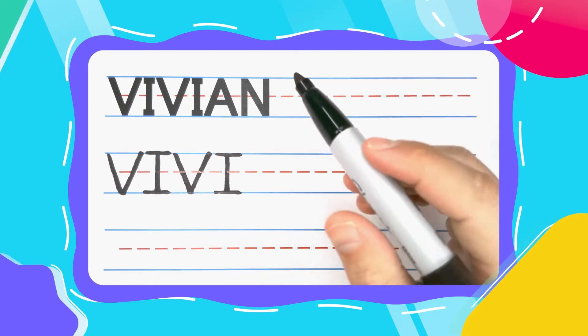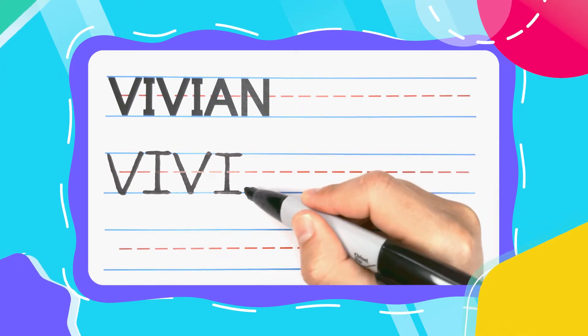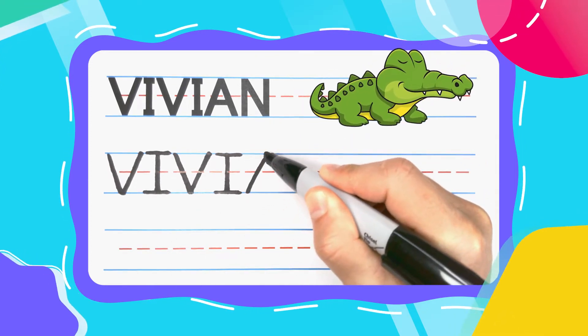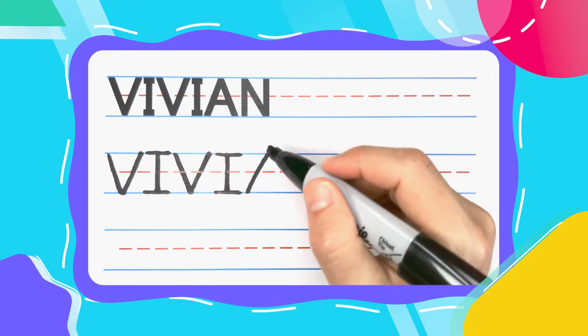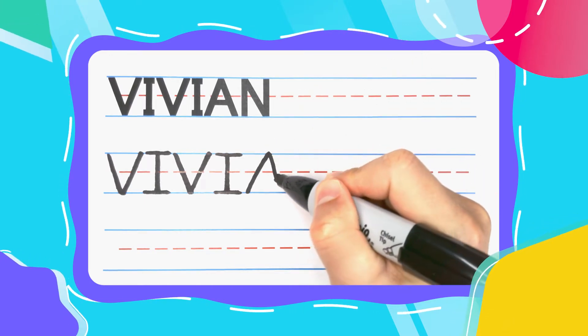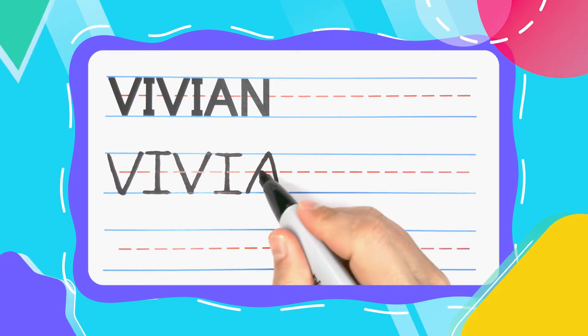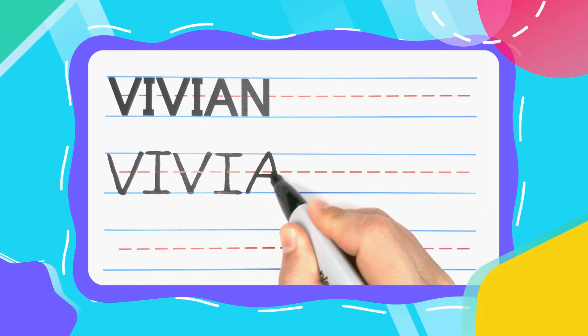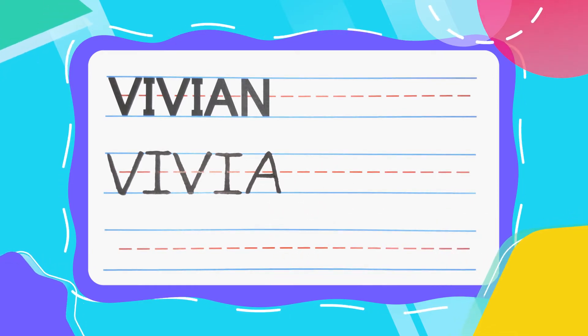Two more letters in Vivian. The next one is the alligator A. Draw your alligator A with the diagonal line up, then do another diagonal line down. Close up that alligator mouth with some alligator teeth to complete your A.